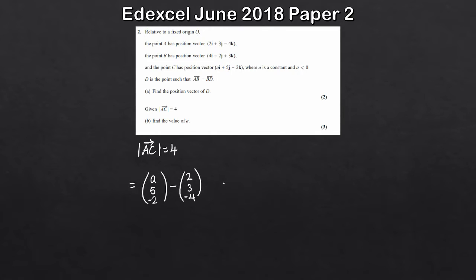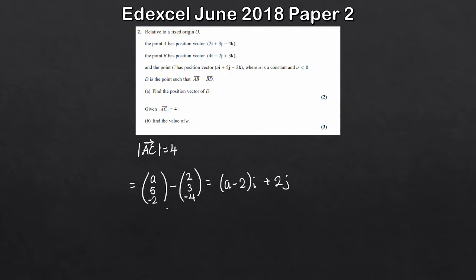So what does that give us? That gives us A minus 2 for the i component, because we don't know what A is yet. We also have 5 minus 3, so that's plus 2j. And then finally minus 2 minus minus 4, so that's minus 2 plus 4, giving us plus 2k. So the vector AC is (A minus 2)i plus 2j plus 2k.